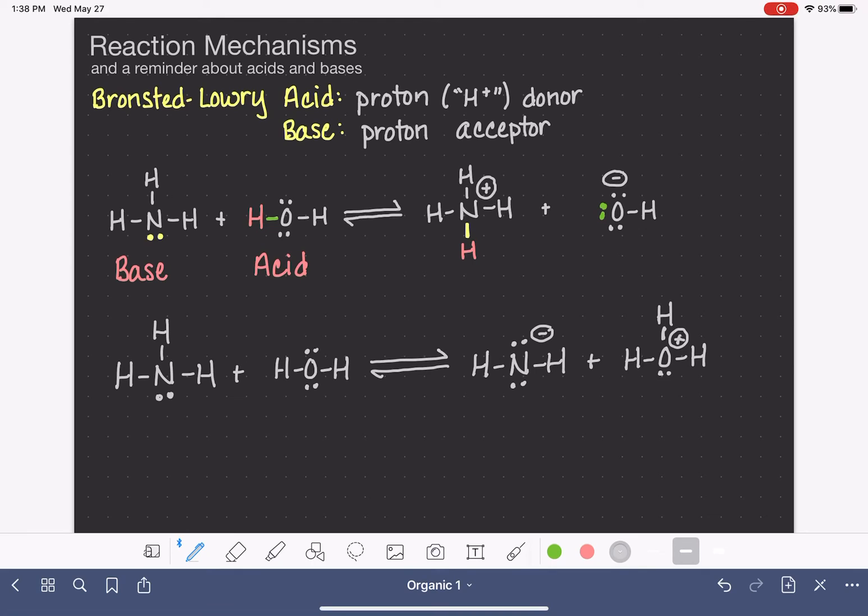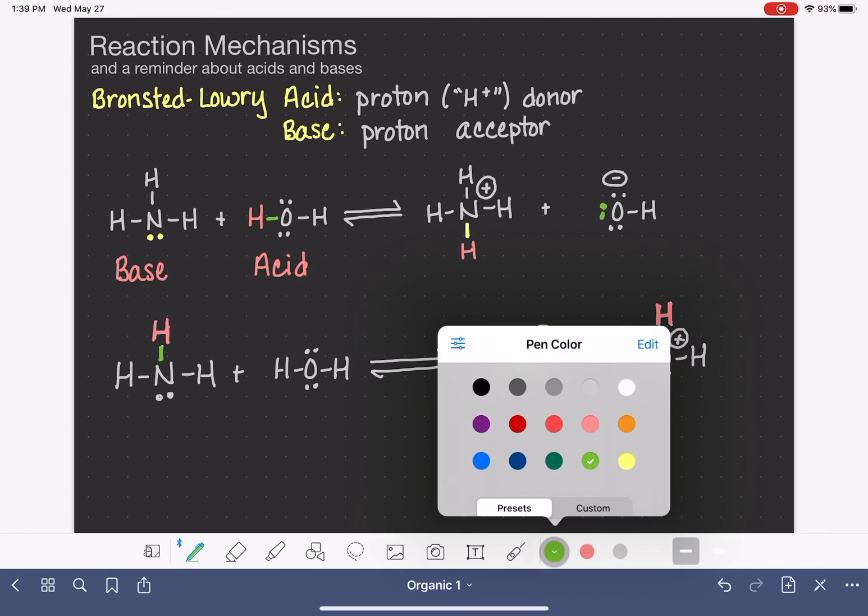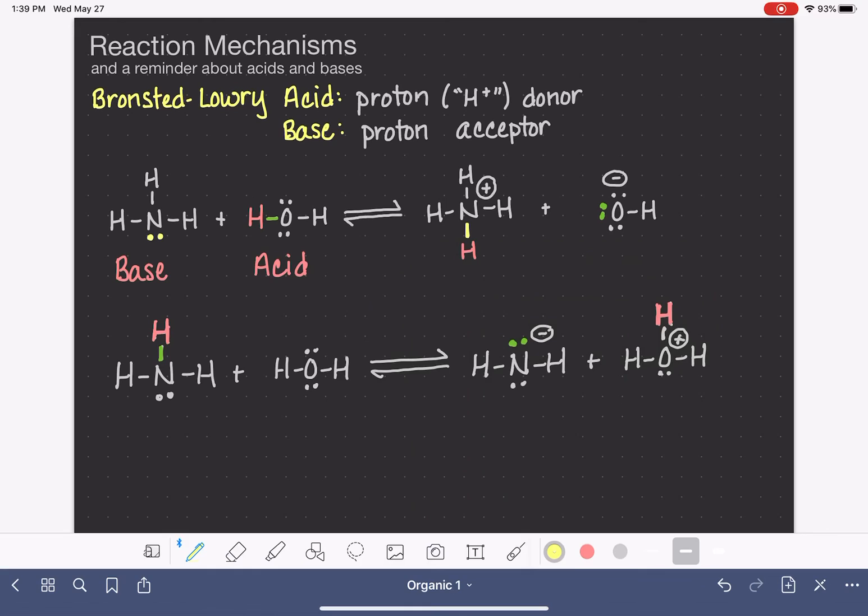And let me color-code again. So let's make the hydrogen that's being moved, let's make it pink, and we'll watch it move from the ammonia over to the oxygen. And let's color the nitrogen-hydrogen bond green. That nitrogen-hydrogen bond becomes a lone pair on the nitrogen. And let's color one of the lone pairs on the oxygen. That lone pair is going to become the new oxygen-hydrogen bond.